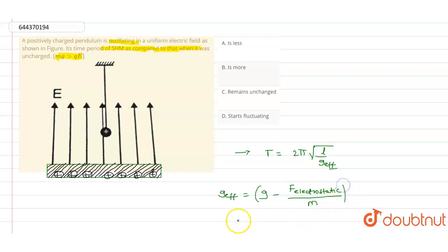This is the g effective value. And as denominator increasing, the time period will also increase. So according to this statement, option B, as the denominator increases, the time period will also increase, so option B is the correct answer. It will become more.